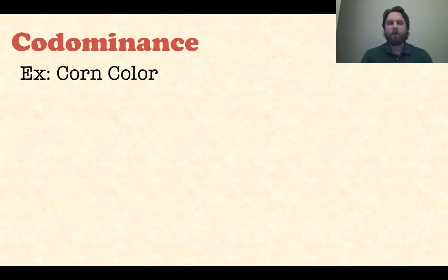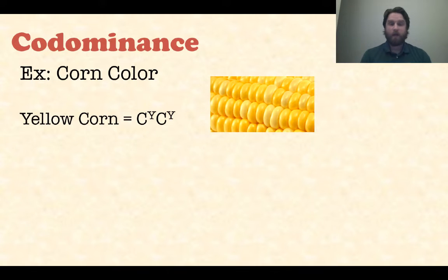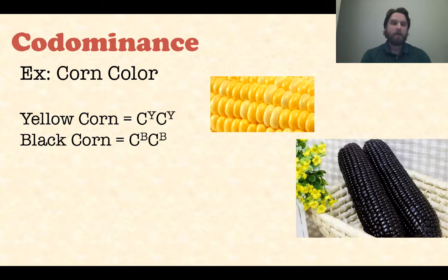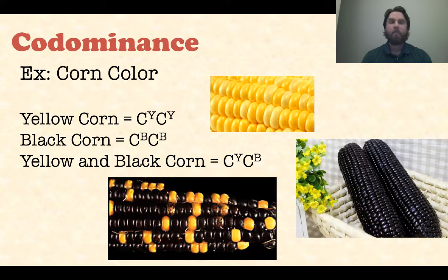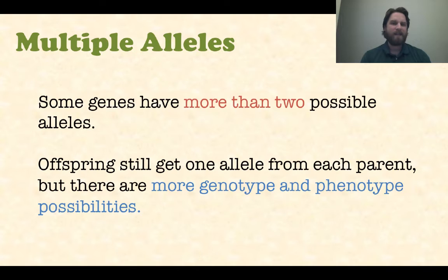A great example is corn color. You have yellow corn with the alleles CY CY, and black corn is CB CB. If you put CY with CB, you get yellow and black corn together. Notice the black and yellow didn't mix to give a completely new color — you see individual kernels that are yellow and individual ones that are black. Therefore both alleles are expressed. It's very important to remember that difference between co-dominance and incomplete dominance.